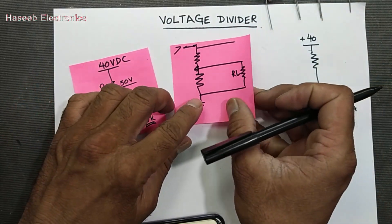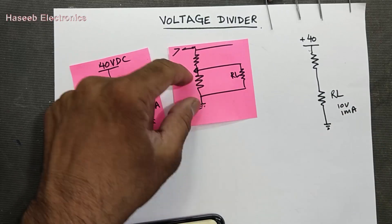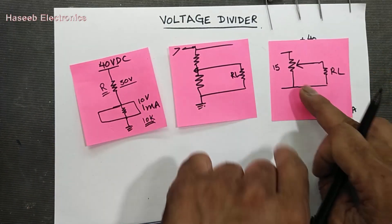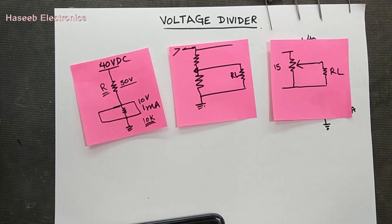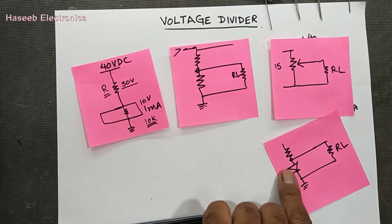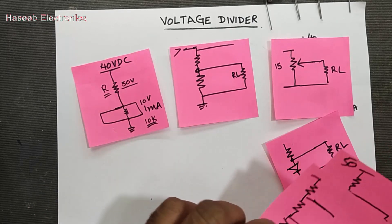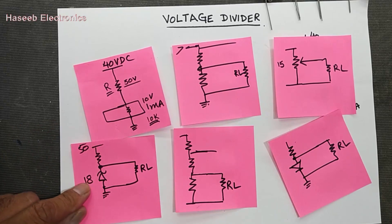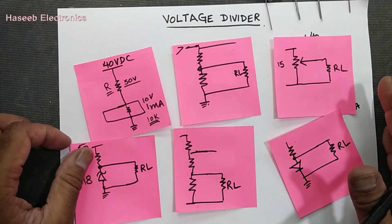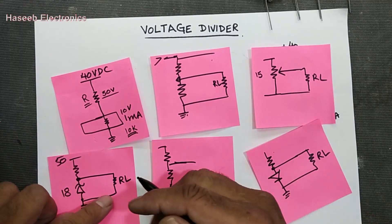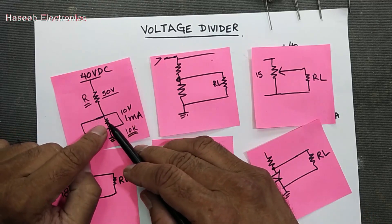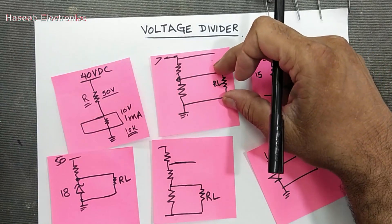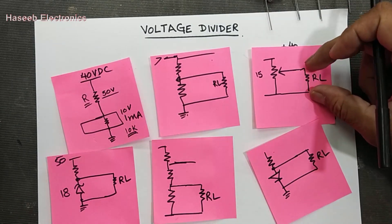We can use two resistors in series and take parallel voltage, or we can use a potentiometer and take output voltage, or we can use some diodes with a resistor in series, or multiple resistor sections, or a resistor with a zener diode. Any method can be used because we have to drop voltage and take the required voltage. In one configuration we have RL load resistor in series, taking parallel voltage — this is a shunt regulator approach.